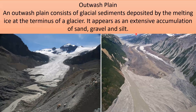Outwash plain: An outwash plain consists of glacial sediments deposited by melting ice at the terminus of a glacier. It appears as an extensive accumulation of sand, gravel, and silt.